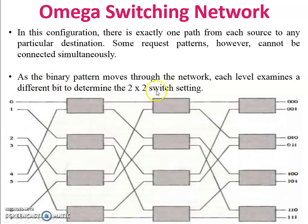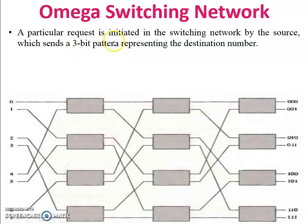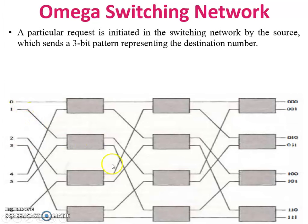Some request patterns cannot be connected simultaneously. As the binary pattern moves through the network, each level examines a different bit to determine the 2×2 switch setting. A particular request is initiated in the switching network by the source. The source sends a three-bit pattern representing the destination number. For example, if a cell comes at port number one and wants to reach destination 100, it generates the path first, then the cell reaches 100 through the established path.